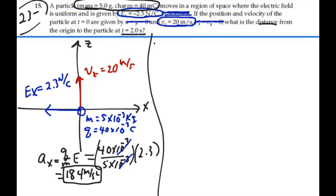So if we're looking at the x direction, we have an initial velocity of 0, an acceleration in the negative x direction so a = -18.4 m/s². We have a time of 2 seconds, and we want to find our displacement.